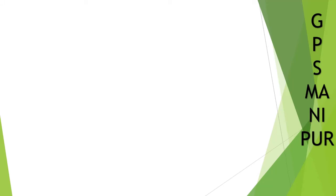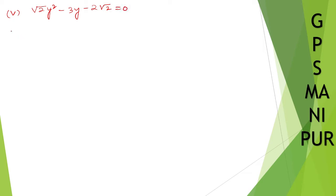Now, we are doing exercise 5.1, question number 1, problem number 5. So, problem number 5 is: root 2 y squared minus 3y minus 2 root 2 equal to 0. Solution.